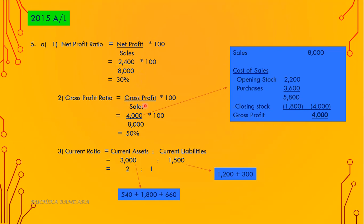Number two: gross profit ratio equals gross profit divided by sales, into 100. To calculate gross profit — total sales 8,000 minus cost of sales. Opening stock 2,200 plus purchases 3,600 minus closing stock 1,800 gives cost of sales of 4,000. So gross profit is 4,000. Over sales of 8,000, into 100, the ratio is 50%.